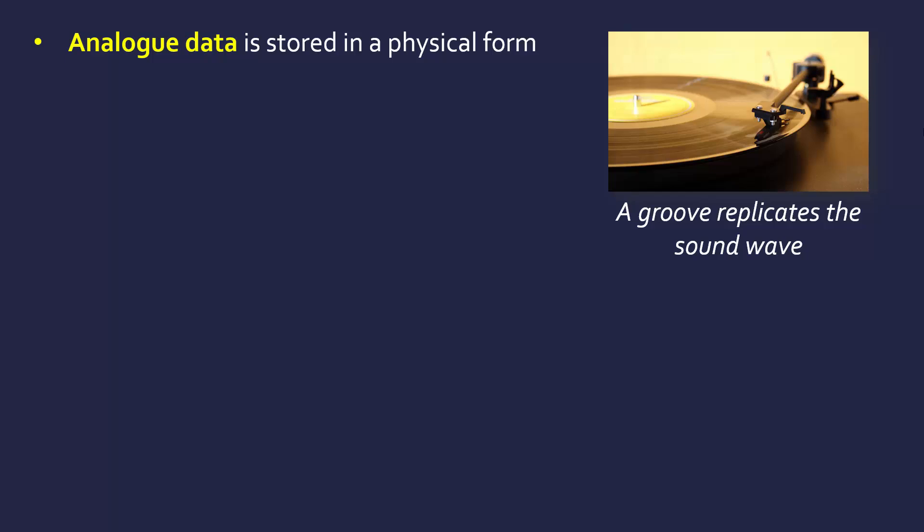For example, this is a vinyl record. They are interesting because they are analog devices. They work by having a groove, and the record player will run around this groove, and in doing so will create the sound. So the data has been stored just as a groove, but it is representing the original analog signal.